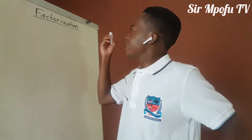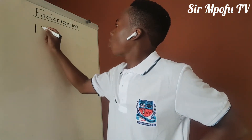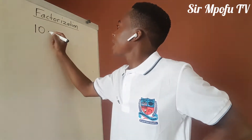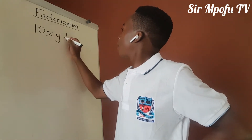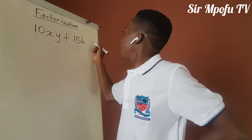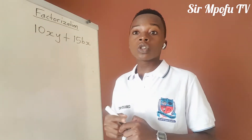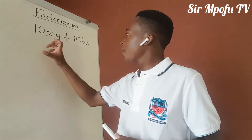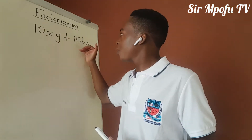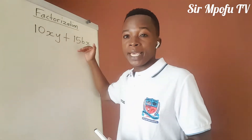Let us do an example so that you completely understand what we mean by factorization. Let's say you have got 10xy plus 15bx. Then you are asked to factorize. How do you factorize here? You remove the highest common factor of 10xy and 15bx.